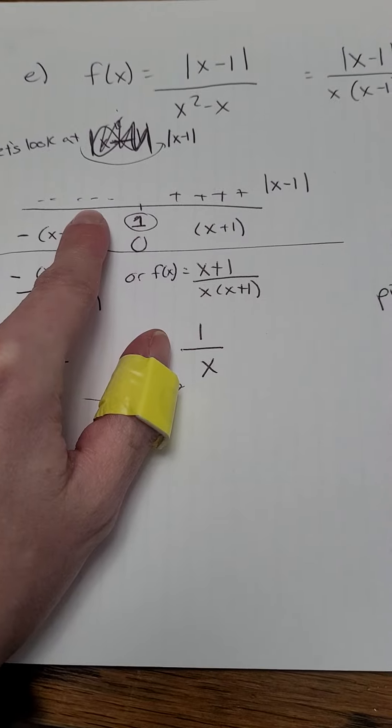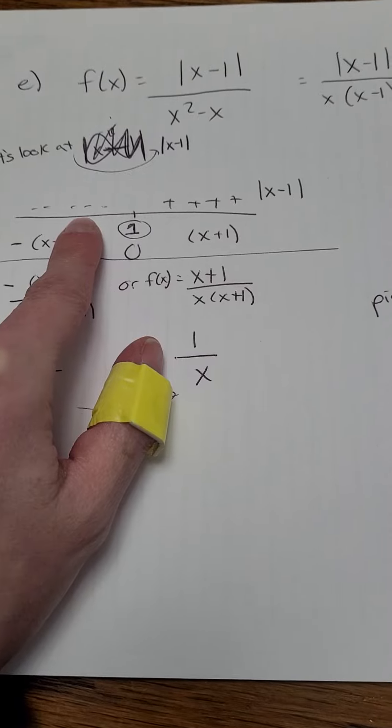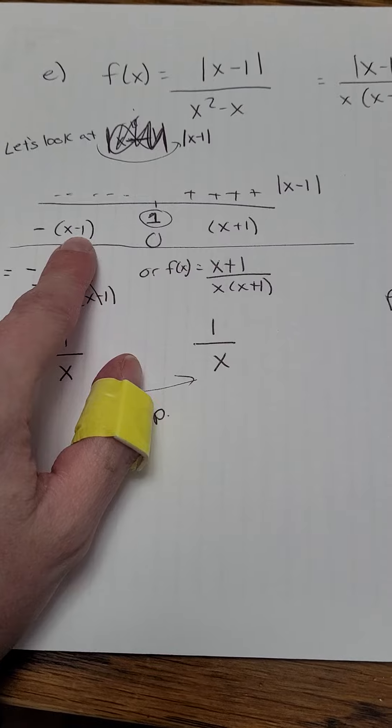Everything less than 1, like negative 5 minus 1 is negative 6. The absolute value of negative 6, to make it positive, will take the negative of its value.